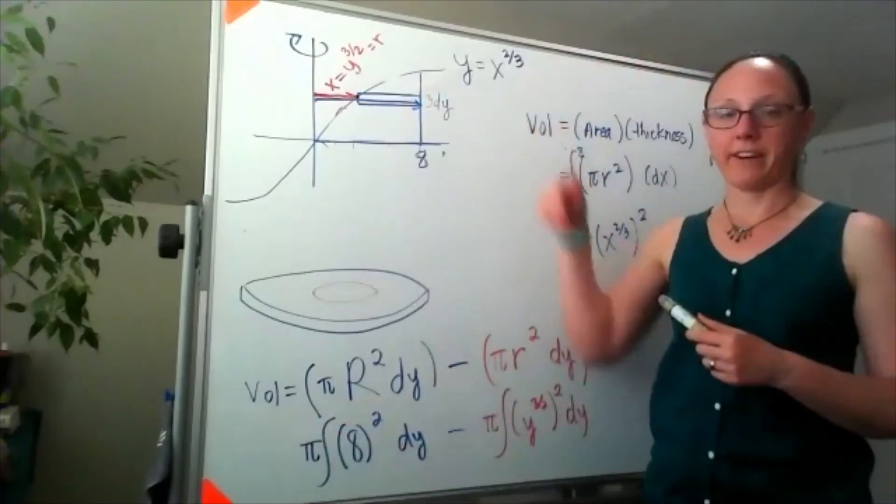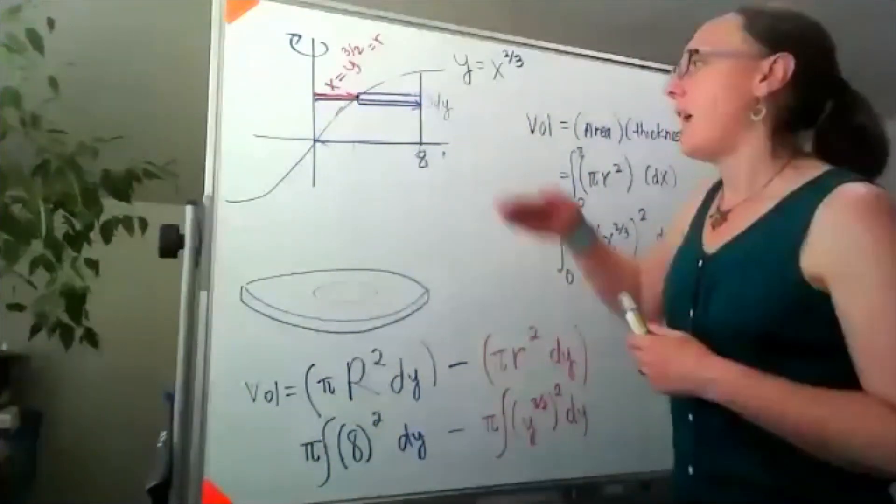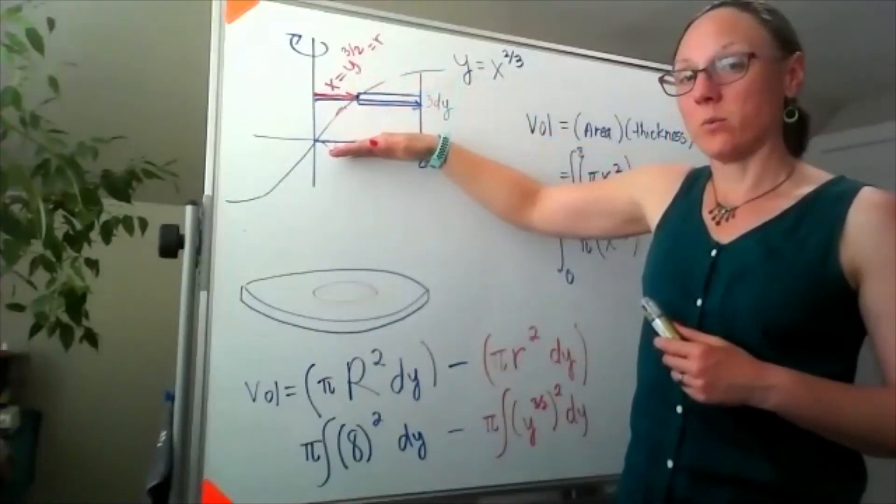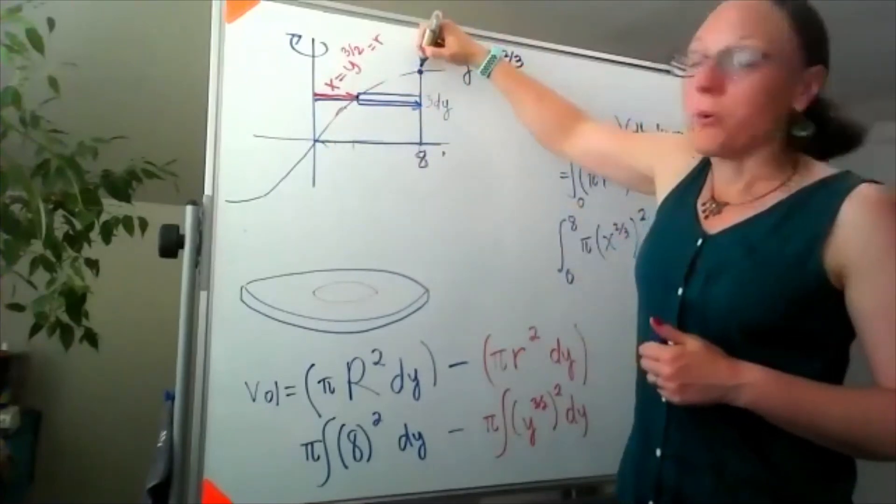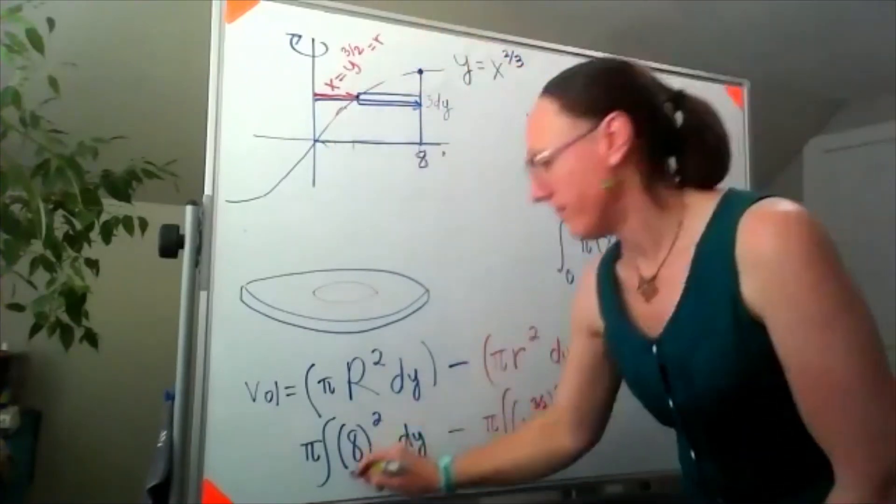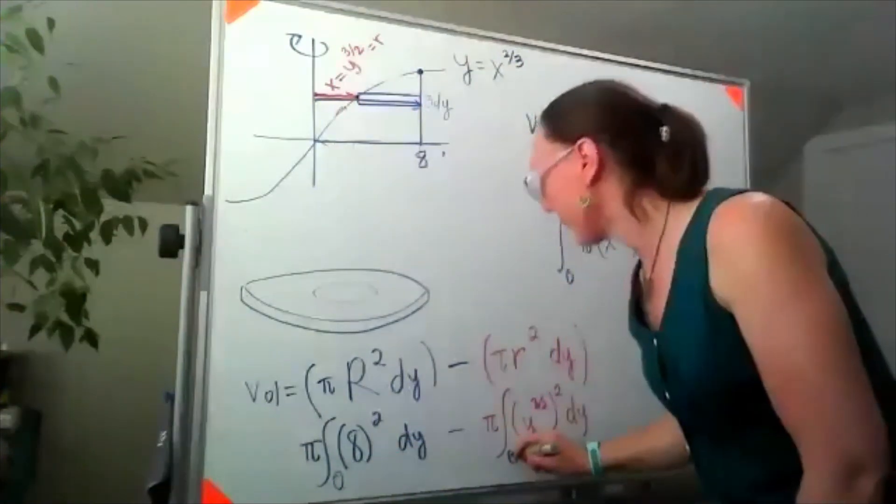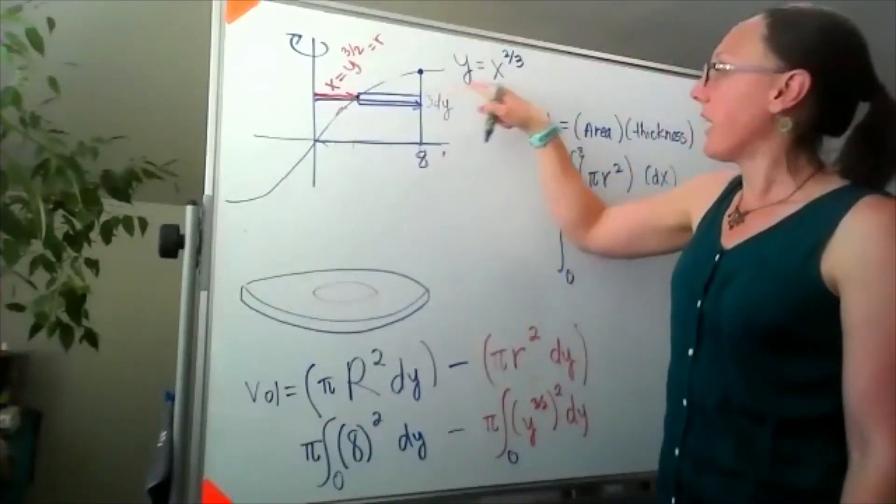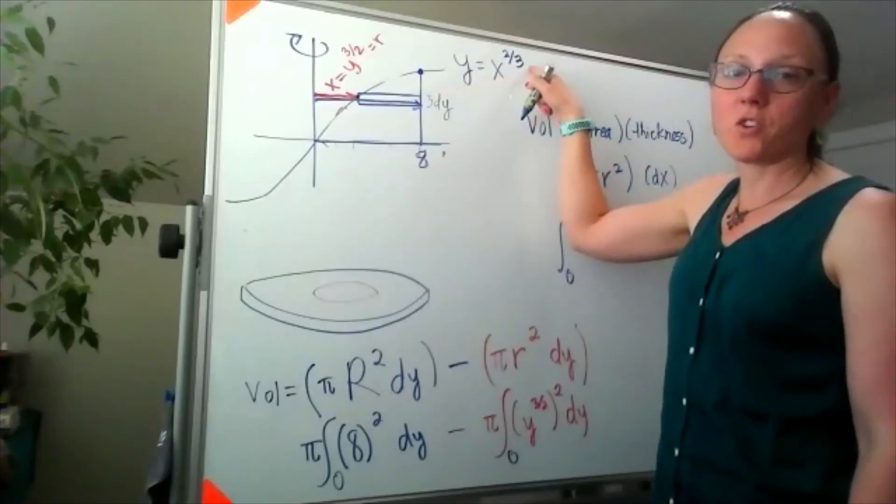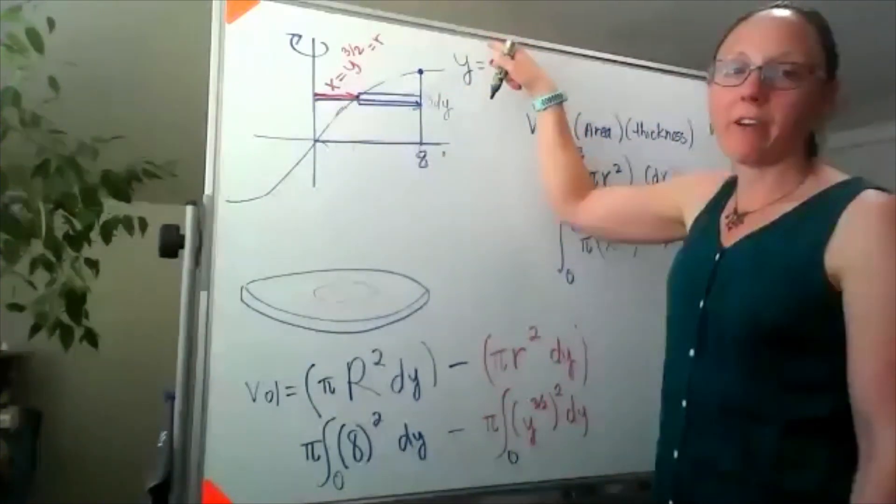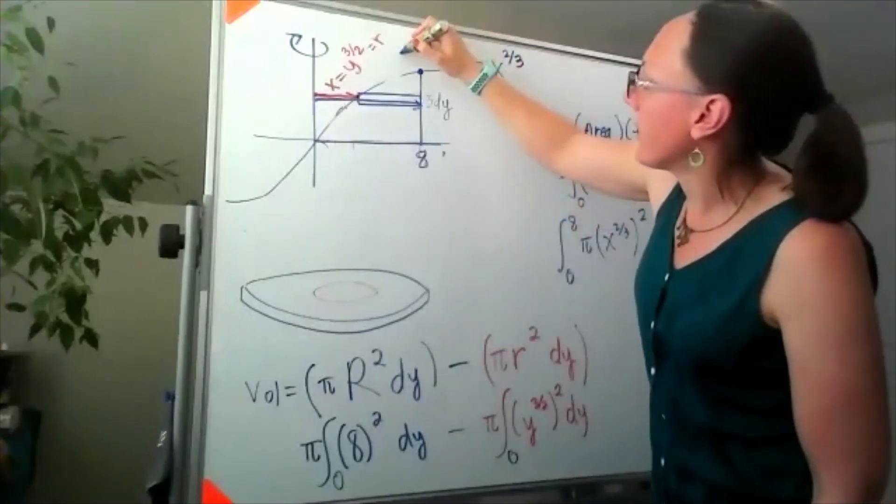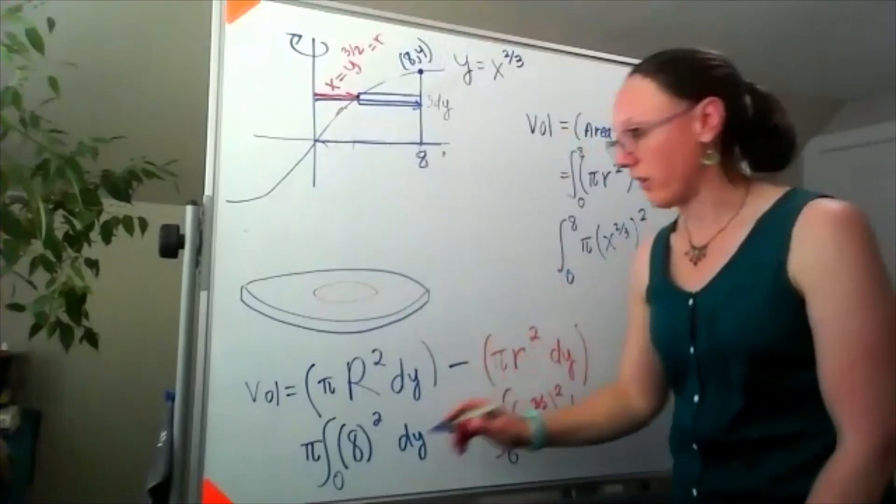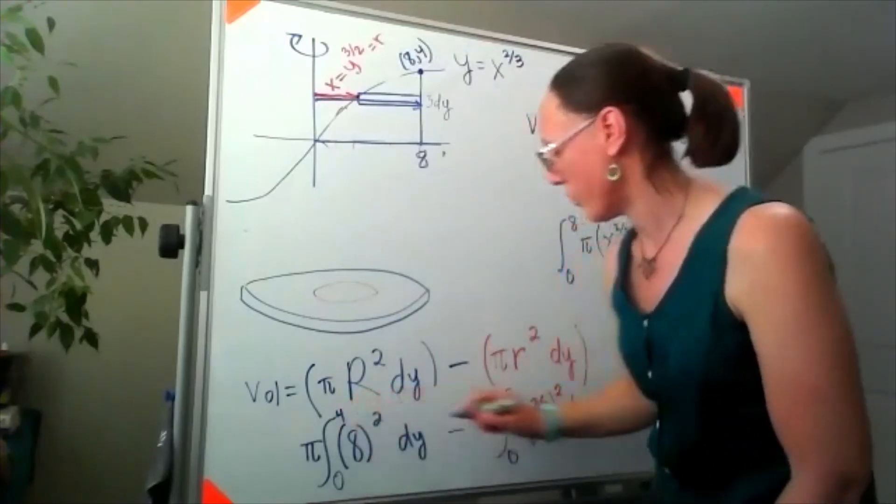In terms of finding our bounds, I know that I would take these cross sections as low as y equals zero, but I need to know the y value to stop at. Since this is an x value of eight, if I plugged in eight, the cube root of eight is two, and squaring that I would get four. So this point is the point eight comma four, and the bounds for our integral would go from zero to four.